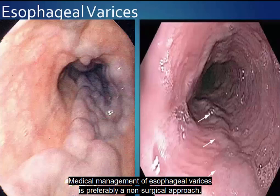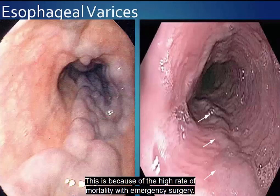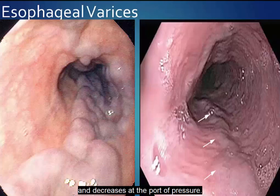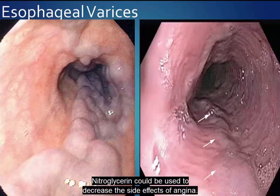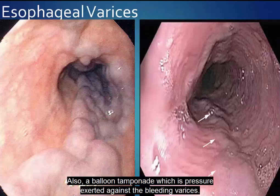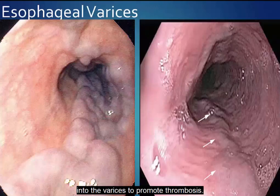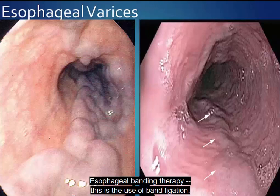Medical management of esophageal varices is preferably a non-surgical approach because of the high rate of mortality with emergency surgery. Pharmacological therapy would include vasopressin, which constricts the arterial bed and decreases portal pressure. Nitroglycerin could be used to decrease the side effects of angina. Other management includes balloon tamponade, which exerts pressure against the bleeding varices; endoscopic sclerotherapy, which uses a sclerosing agent injected through the endoscope into the varices to promote thrombosis; and esophageal banding therapy using band ligation. Surgical management would be surgical bypass procedures.